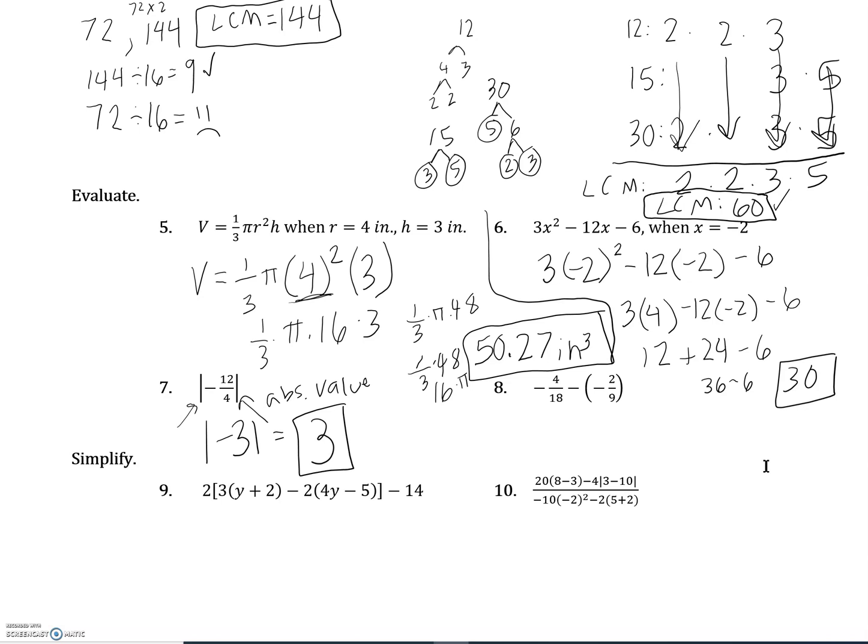Number eight, we have two fractions that we are subtracting. Remember when we subtract a negative, that becomes plus a positive. So this is really negative 4 eighteenths plus positive 2 ninths. And whenever you add or subtract fractions, you need a common denominator. So I'm going to make this, instead of 2 ninths, 4 eighteenths. So negative 4 eighteenths plus positive 4 eighteenths, oh that worked out nicely, we just get 0 eighteenths, but you don't have to write the 18, just 0.